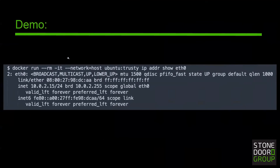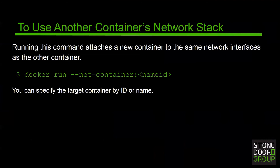We have another option when it comes to networking — to use another container's network stack. If we ran this command instead, it would attach a new container to the same network interface as the other container. You could specify that target container by ID or by name. Bill, have you worked with this or run across this use outside of testing?